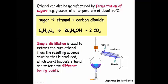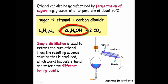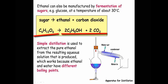Looking at the equation for the fermentation process, we start with sugar, which is glucose, C6H12O6 aqueous, producing ethanol, C2H5OH liquid, and carbon dioxide gas. Over the arrow we write yeast. For every molecule of glucose used in the fermentation process, we produce two molecules of ethanol and two molecules of carbon dioxide.